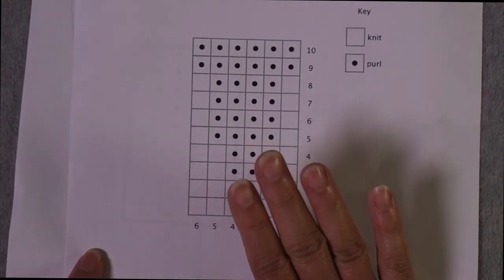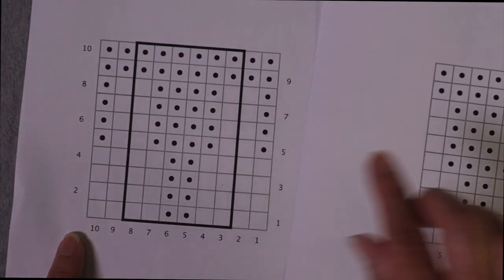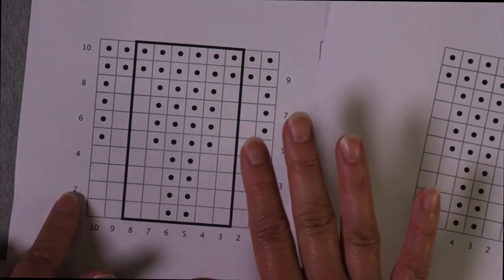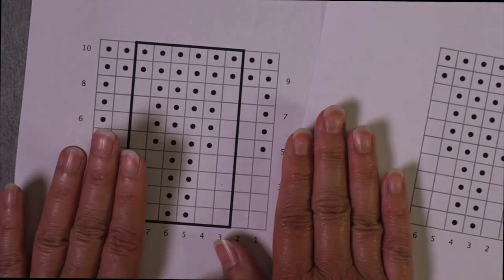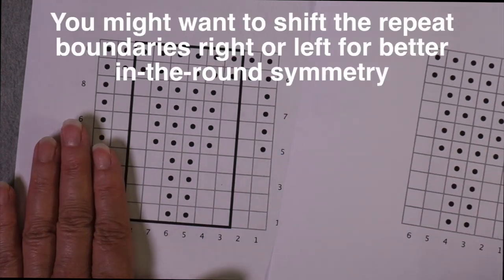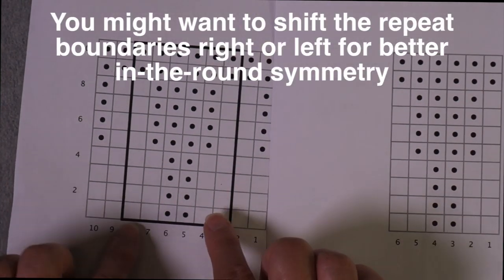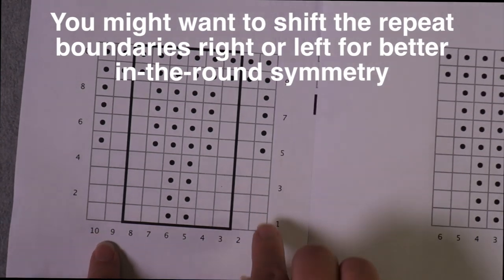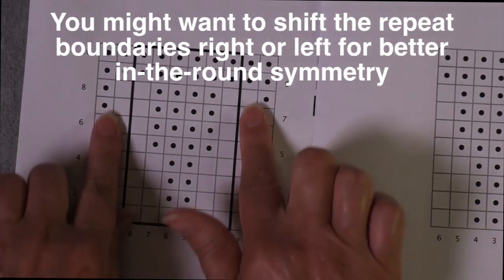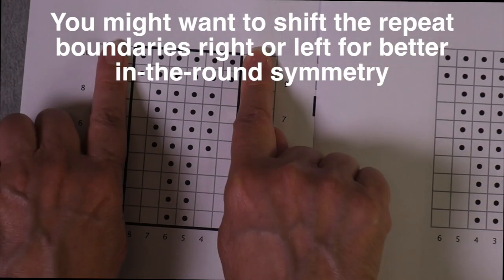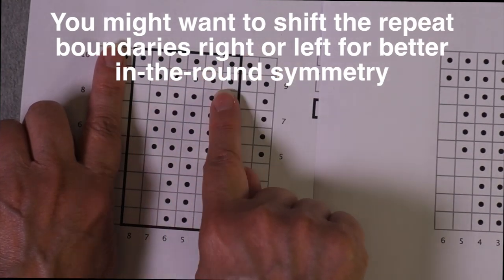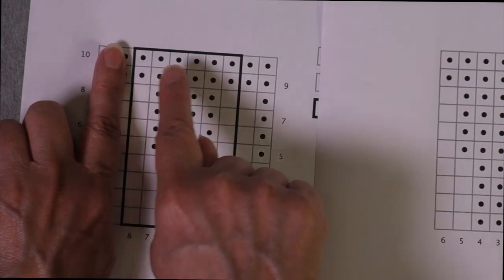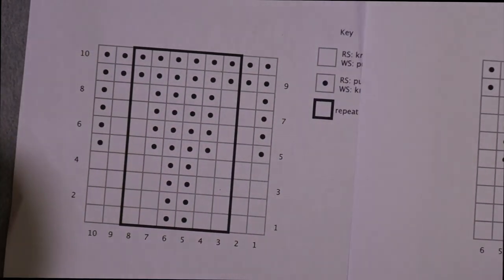Now this isn't always true. Sometimes there's an extra stitch or two that does something to balance the stitch pattern regardless of whether it's knit flat or in the round. But in most cases, when you see a stitch pattern that is presented for knitting flat and you can see that these are there to create symmetry, you can look to see if this pattern can just be worked with what's in the boundaries when you are working in the round.